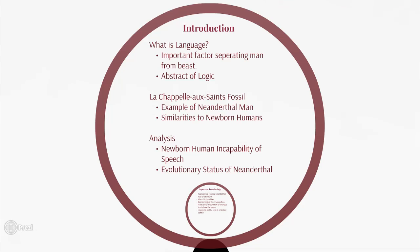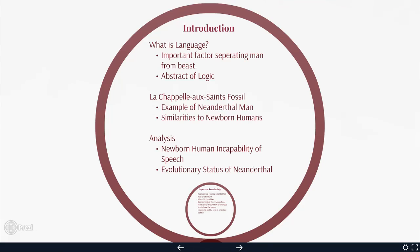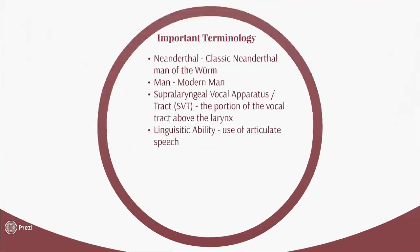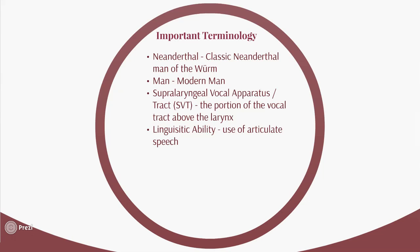The analysis in this paper used the fact that newborn humans are incapable of speech, and the evolutionary status of Neanderthal was examined in comparison. Some important terminology: 'Neanderthal' refers to the classic Neanderthal man of the Würm — the last glacial period. 'Man' refers to modern man, people like us. The supralarygneal vocal tract, or SVT, is the portion of the vocal tract above the larynx. 'Linguistic ability' refers to the ability or use of articulate speech.